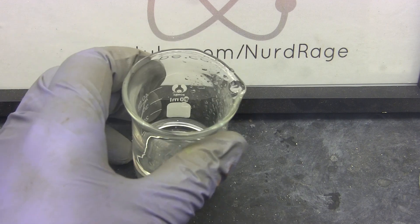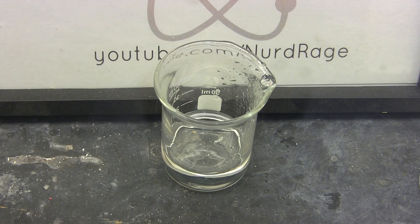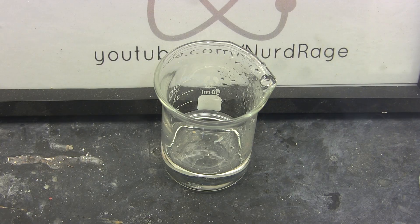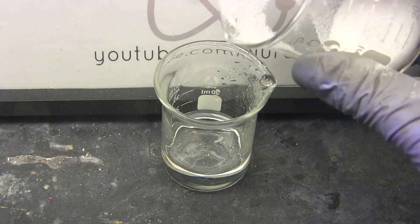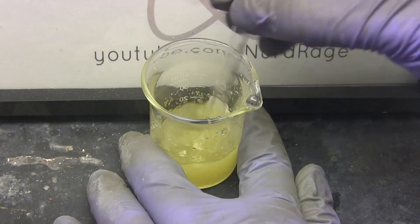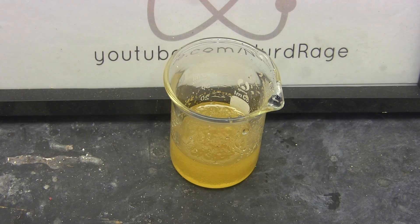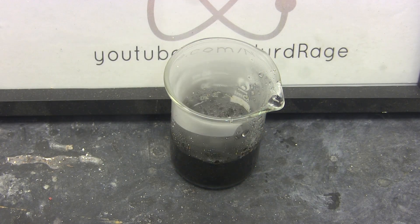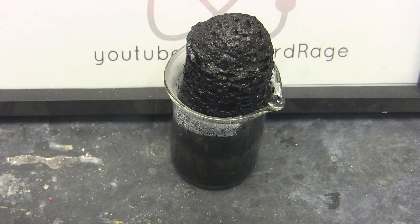And there we have it, it took a lot of work but we made sulfuric acid from sulfur and water using hydrobromic acid as the catalyst. To test the acid I'm going to use an equal volume of sugar to run the famous carbon pillar experiment. The production of carbon confirms that we have a strong concentration of acid.